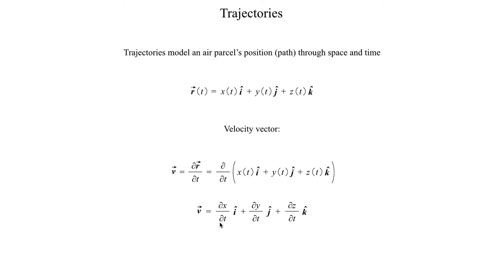You may remember that dx/dt is the zonal wind component, dy/dt is the meridional component, and dz/dt is the vertical component. So we can rewrite this as the fundamental wind vector definition. In the earlier definition we implied the wind vector was a function of x, y, z, and t, and now we can show mathematically that the zonal, meridional, and vertical components do in fact have a time dependence when we introduce the idea of a trajectory.